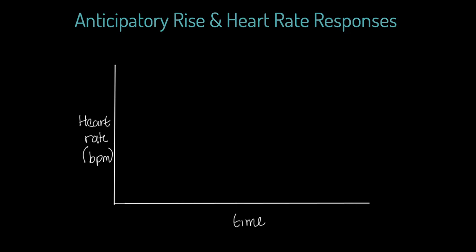Let's imagine someone goes out on a 20-minute training run. Here is the start of their run and 20 minutes later this is the end of their run. We've got some period before, the run itself, and a period after the run. We're looking at heart rate in beats per minute across the y-axis and time across the bottom.